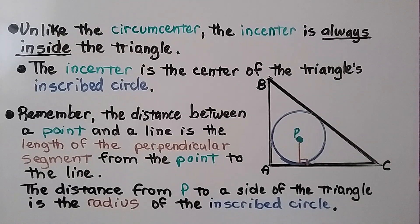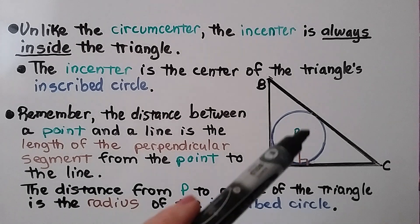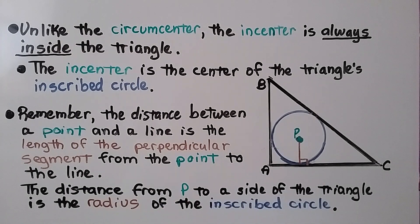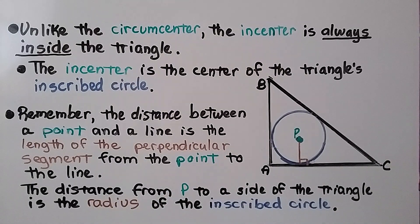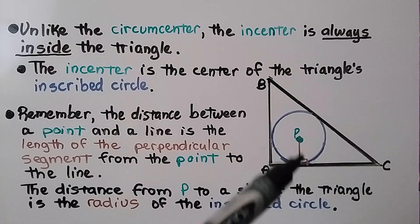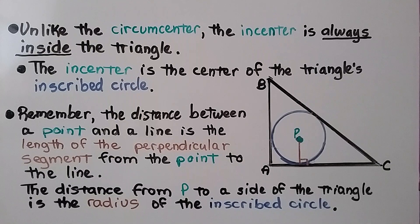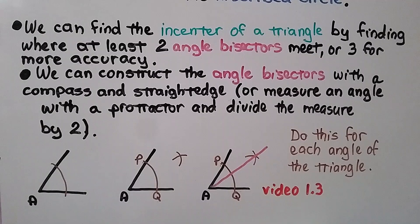Unlike the circumcenter, the in-center is always inside the triangle. The in-center is the center of the triangle's inscribed circle. Remember, the distance between a point and a line is the length of the perpendicular segment from the point to the line, and the distance from P to a side of the triangle is the radius of the inscribed circle.